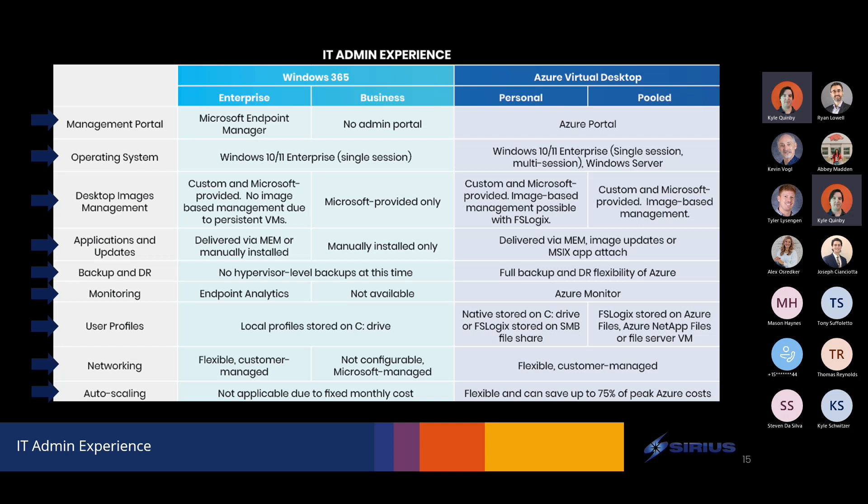On networking: the enterprise Windows 365 does give us connectivity back to our business networks, but it's very prescriptive in how that happens. With AVD, we have full flexibility that we would expect for any other Azure IaaS service — we can control that networking however we'd like. On autoscaling: for Windows 365, there's really no need for autoscaling. It's almost like reserved instances — you're paying for your virtual desktop, it doesn't save you money to shut it down because it's a fixed cost. Very easy to predict, but that cost is going to be a little higher because Microsoft is running the compute for you.